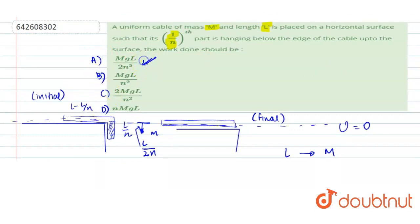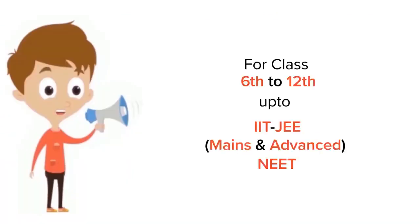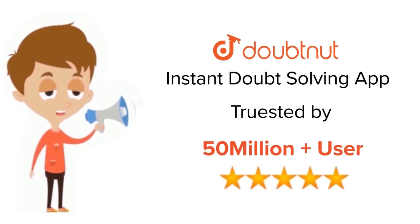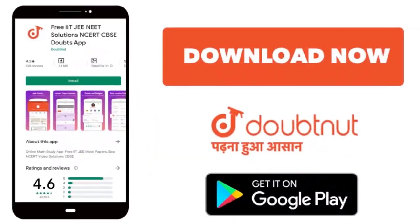And that is given to us in option A, okay? I hope this helps you with the answer. Thank you. For class 6 to 12th, IIT-JEE and NEET level, trusted by more than 5 crore students, download Doubtnet app today.